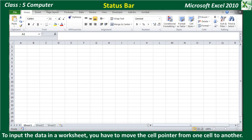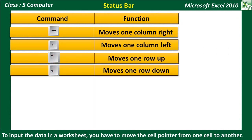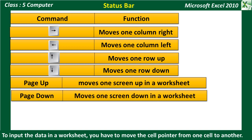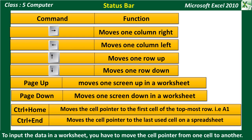To input data in a worksheet, you have to move the cell pointer from one cell to another with the help of various keys. Arrow keys are used to move a column right or left, and a row up and down. Page Up moves one screen up in a worksheet. Page Down moves one screen down in a worksheet. Ctrl+Home moves the cell pointer to the first cell of the topmost row, that is A1. Ctrl+End moves the cell pointer to the last used cell on a spreadsheet.